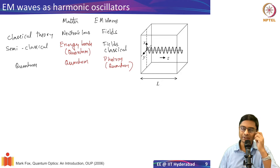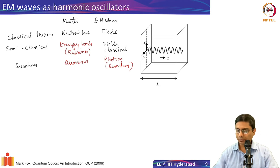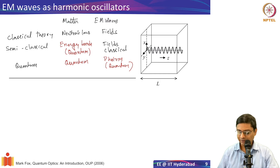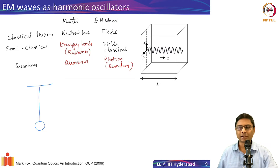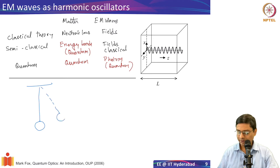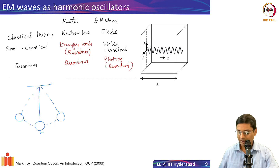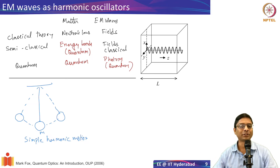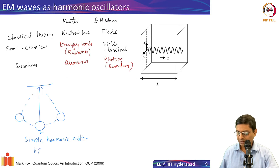We know about the classical harmonic oscillator — for example a pendulum, a mass suspended from a rigid support by a string. If you push that ball it undergoes simple harmonic motion. As the pendulum swings, energy continuously exchanges between kinetic and potential energy components, and that is what leads to the oscillatory motion.